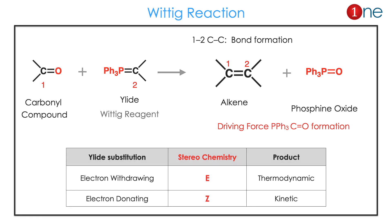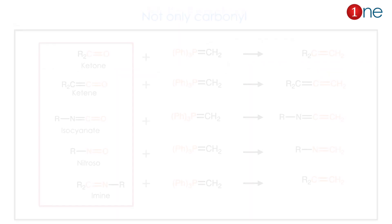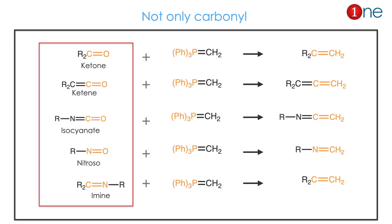Not only carbonyls — similar carbonyl systems can also undergo the Wittig reaction. A combination of carbon-carbon double bond or nitrogen-carbon double bond is the final product. It can be a simple ketone, ketene, isocyanide, nitroso, or imine — all are possible with the Wittig reaction.